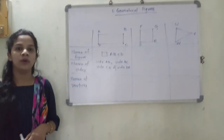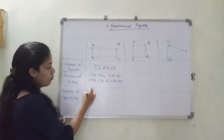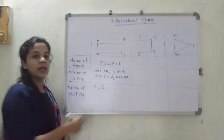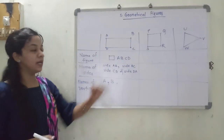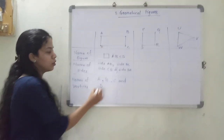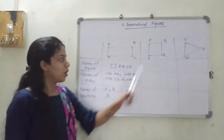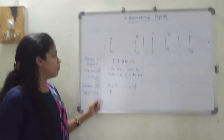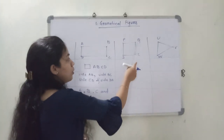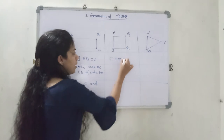Now tell me the name of the vertices. A is one corner, so I write A. The next vertex is B, then C, and the last one is D. So A, B, C and D are the four vertices. Now, can you tell me the name of the next figure? I know it is a square, but we are going to write it as PQRS - so it is square PQRS.